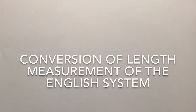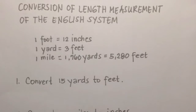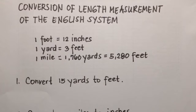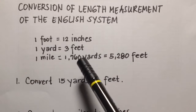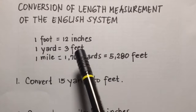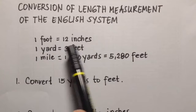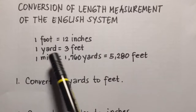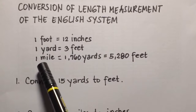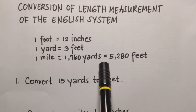In this video, I'll discuss the conversion of length measurements in the English system. To convert units of length, we use the following conversion factors: 1 foot equals 12 inches, 1 yard equals 3 feet, and 1 mile equals 1,760 yards.